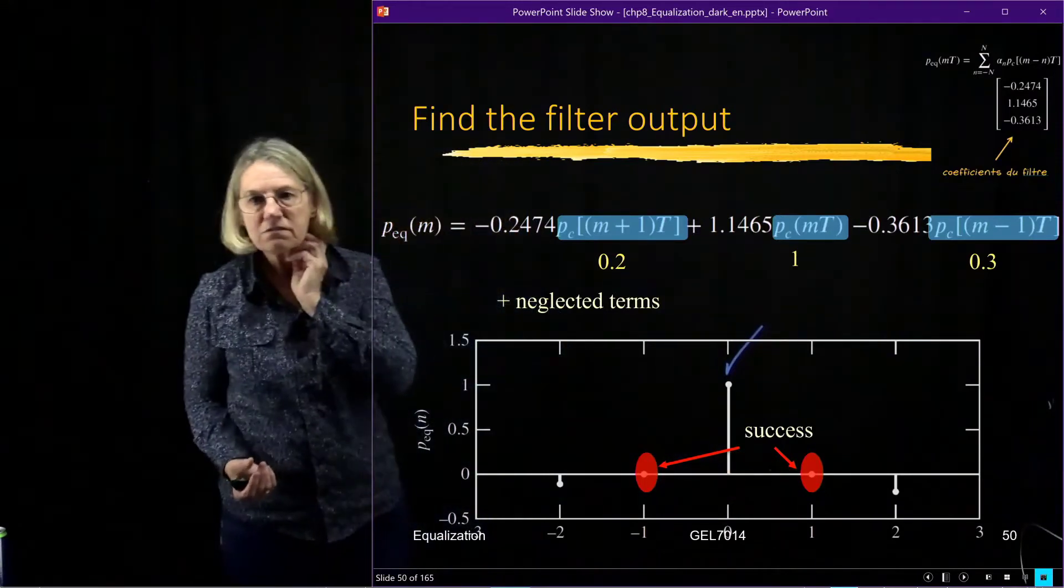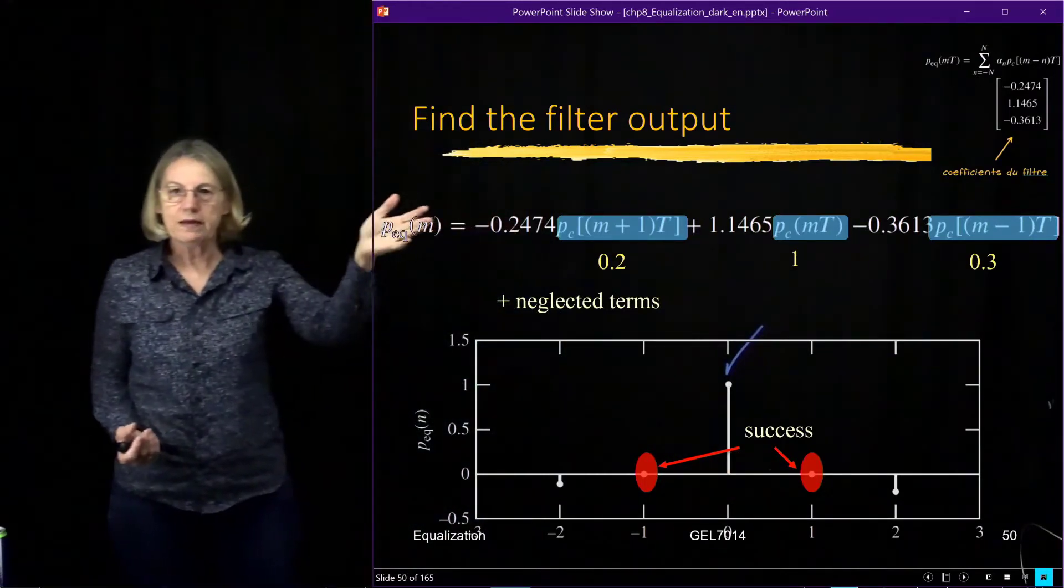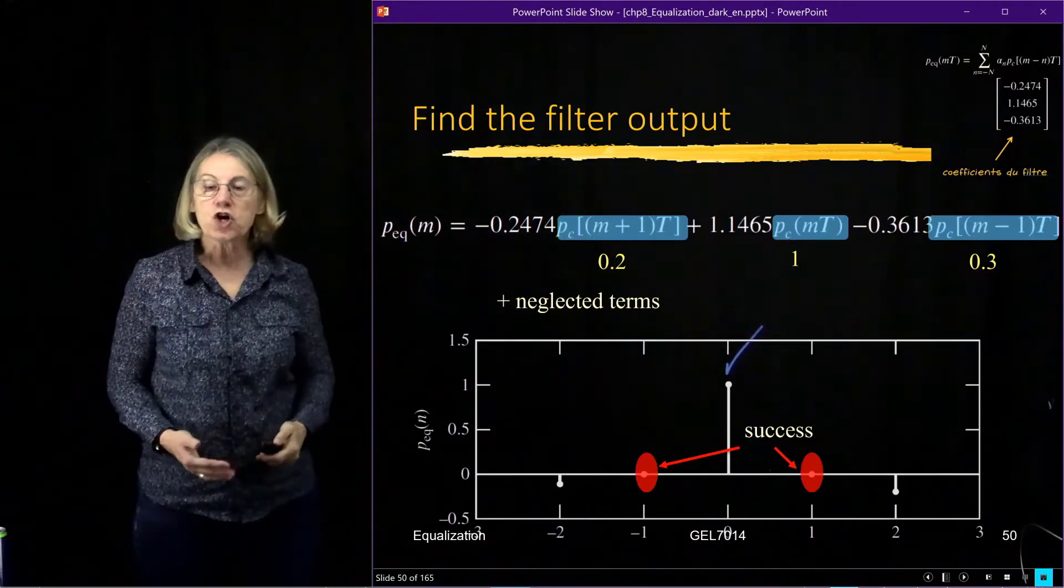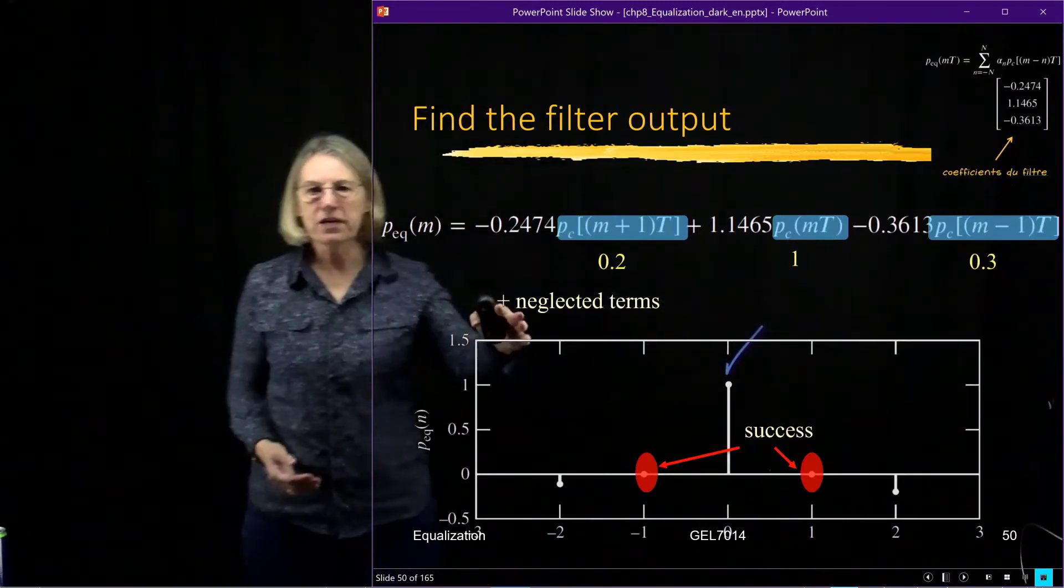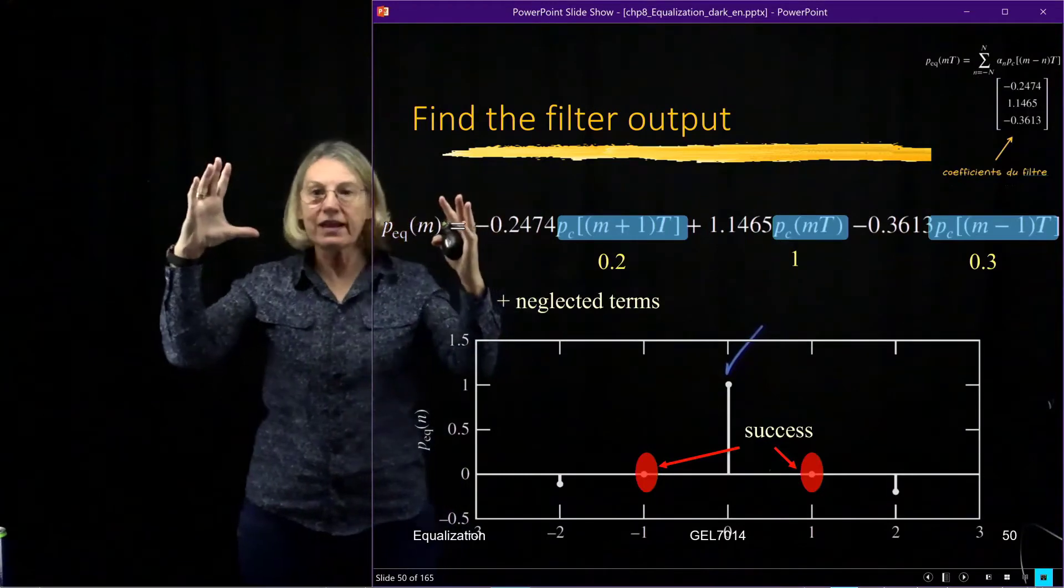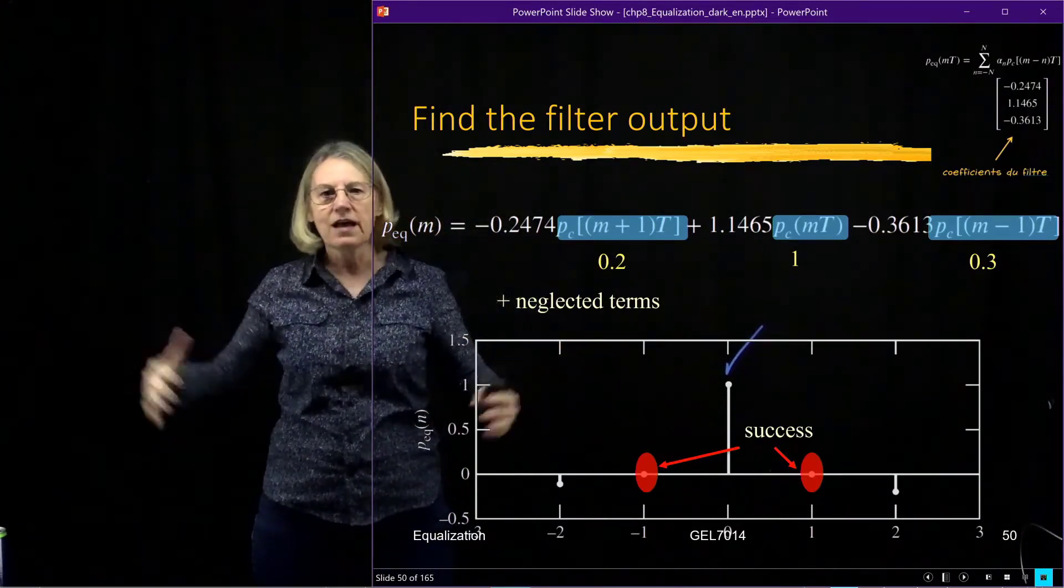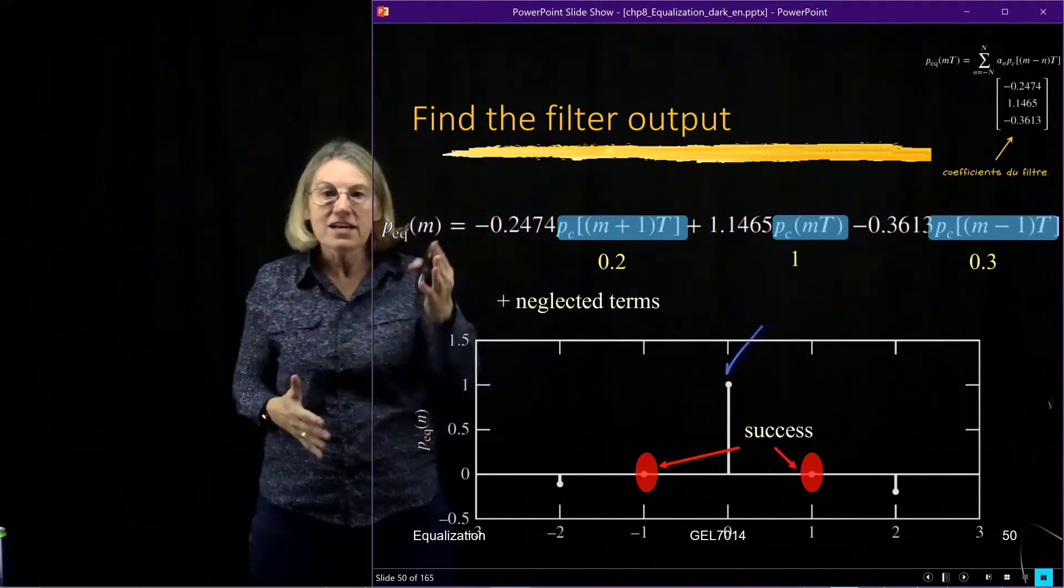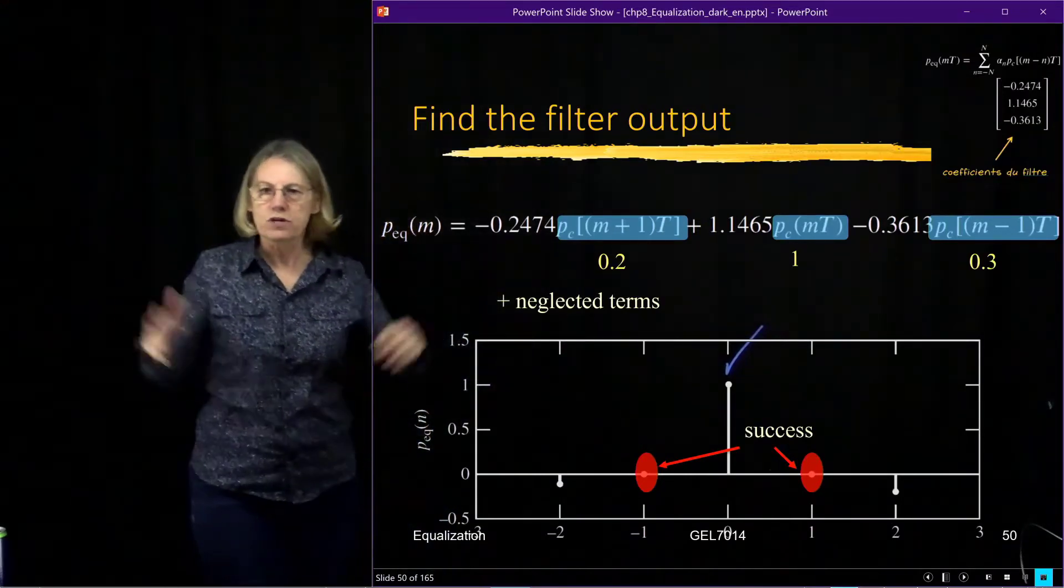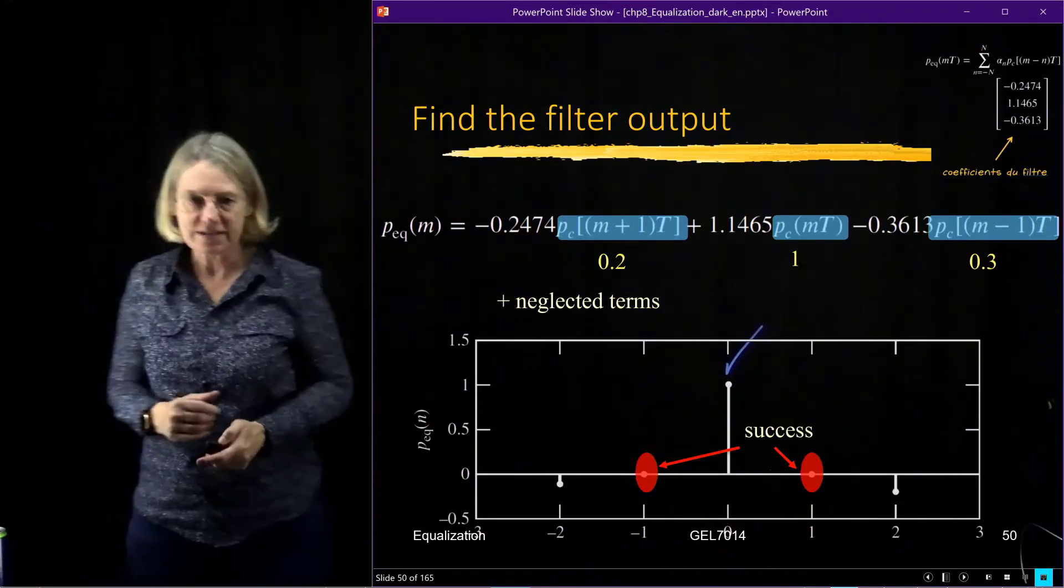Of course there are going to be influences from the other terms which I neglected because my matrix was only 3 by 3. So if I had a bigger matrix I would have more elements in this and I would have more taps in my equalizer.